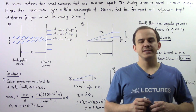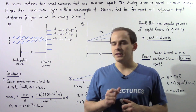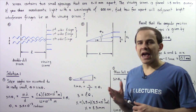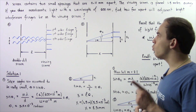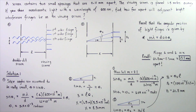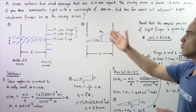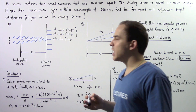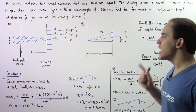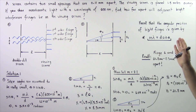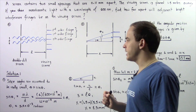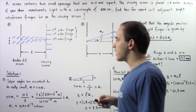Let's examine the following example that deals with a double slit experiment. Suppose a screen contains two very small openings separated by 0.11 millimeters. A second screen — the viewing screen — is placed 1.5 meters away from the screen with the two openings. If you shine monochromatic light with a wavelength of 600 nanometers onto the double slit screen, find how far apart adjacent bright fringes will form on the viewing screen, as described in diagram A.